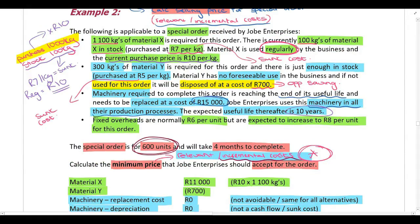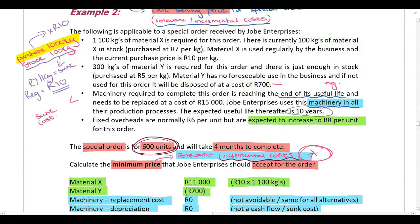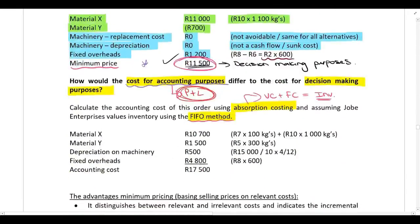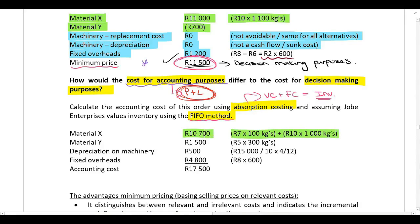For Material X under FIFO: we need 1,100 kilograms; 100 kilograms in stock were purchased at 7 Rand per kilogram, so those are valued at 7 Rand each for accounting purposes. The additional 1,000 kilograms to be purchased are valued at 10 Rand per kilogram. Under FIFO we keep these separate, unlike weighted average where we would combine them and calculate an average price.